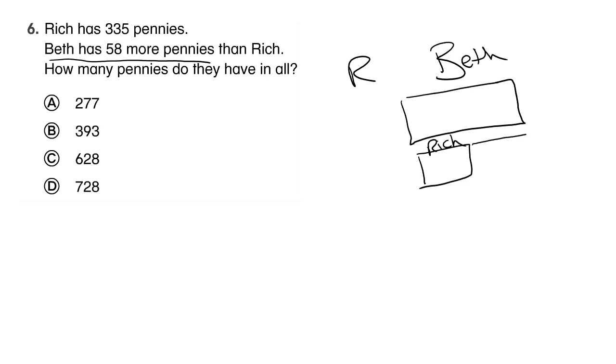And this right here is going to be the difference between the two. So now that we've visualized our problem, we have our bar diagram. We can go ahead and put in our numbers. Rich has 335 pennies and the difference between Rich and Beth is 58. We want to know how many pennies do they have in all.